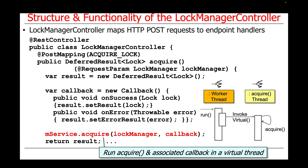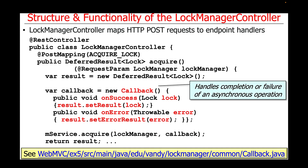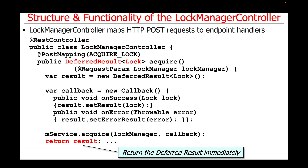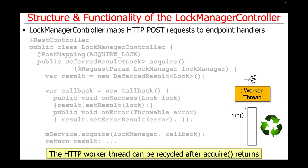We then call the acquire method on the service, which we have auto-wired together with our controller. As we'll see when we look at the service implementation in the next part of this lesson, that acquire method will actually run in a virtual thread. That method and the associated callback we're passing in will run in a virtual thread, decoupled from the worker thread. The worker thread is able to return the deferred result immediately back to the part of the server that dispatched it, and then that worker thread can be recycled — reused for some other incoming request from a client after the controller's acquire method returns.